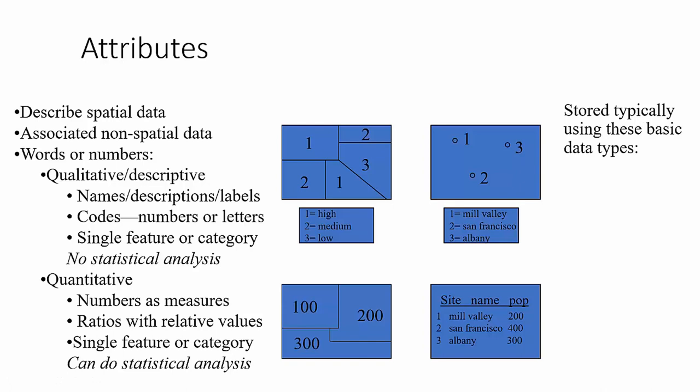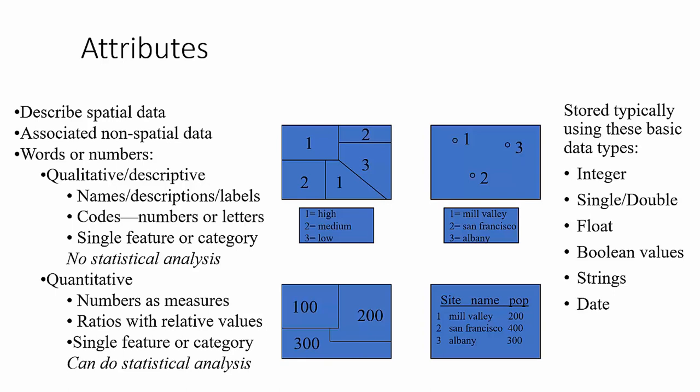Attributes are stored using the basic data types in the database: integer values or whole numbers; single or double precision numbers with decimal places for precise measurements; a floating point number with an undefined number of significant digits; a Boolean value for presence or absence, yes/no, on/off; a string for storing a name or description; or a specialized type like a date for time reference. There are also less common types like blobs — binary large objects — which might store associated items, such as a picture from a camera attached to a survey point record.